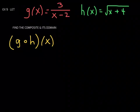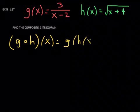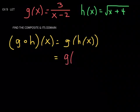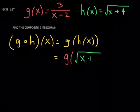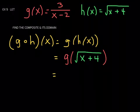By definition, g composed with h at x is equal to g of h of x. This is equal to g of, now I'll replace h of x with the expression that defines it. So h of x is defined as the square root of x plus 4.